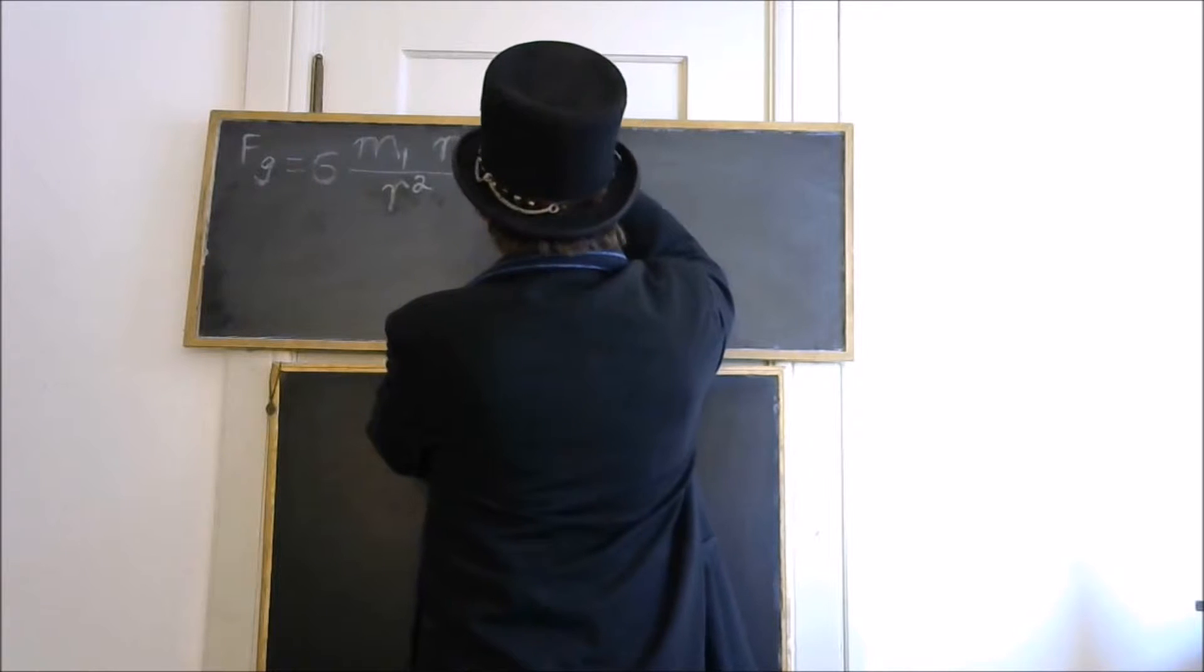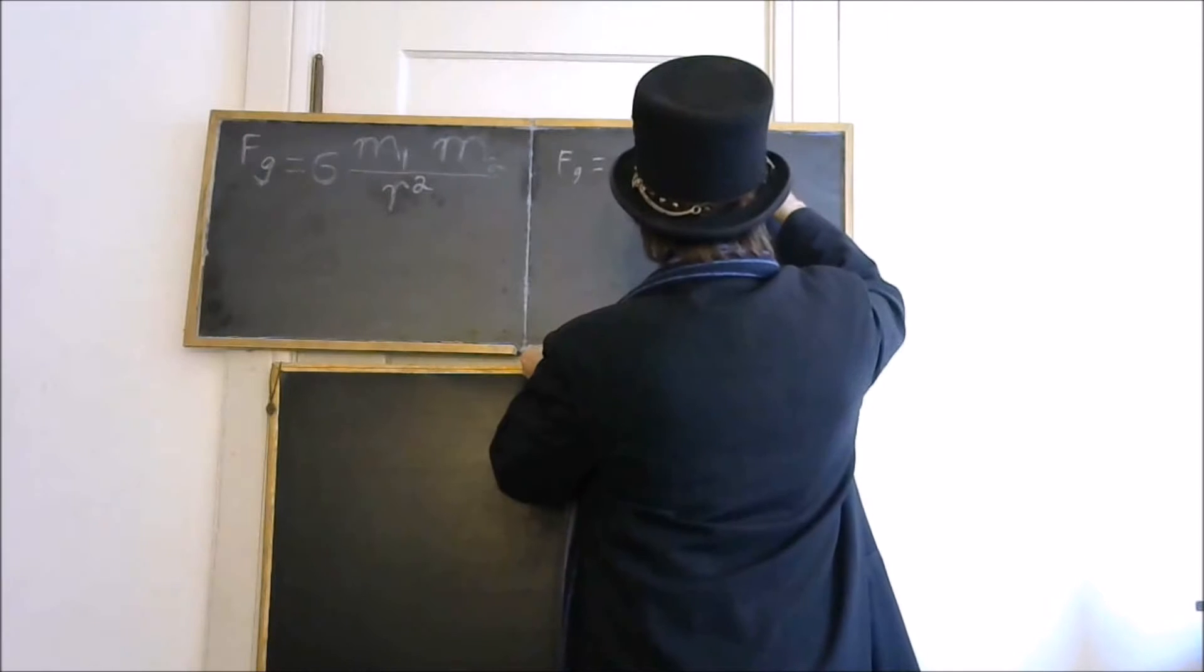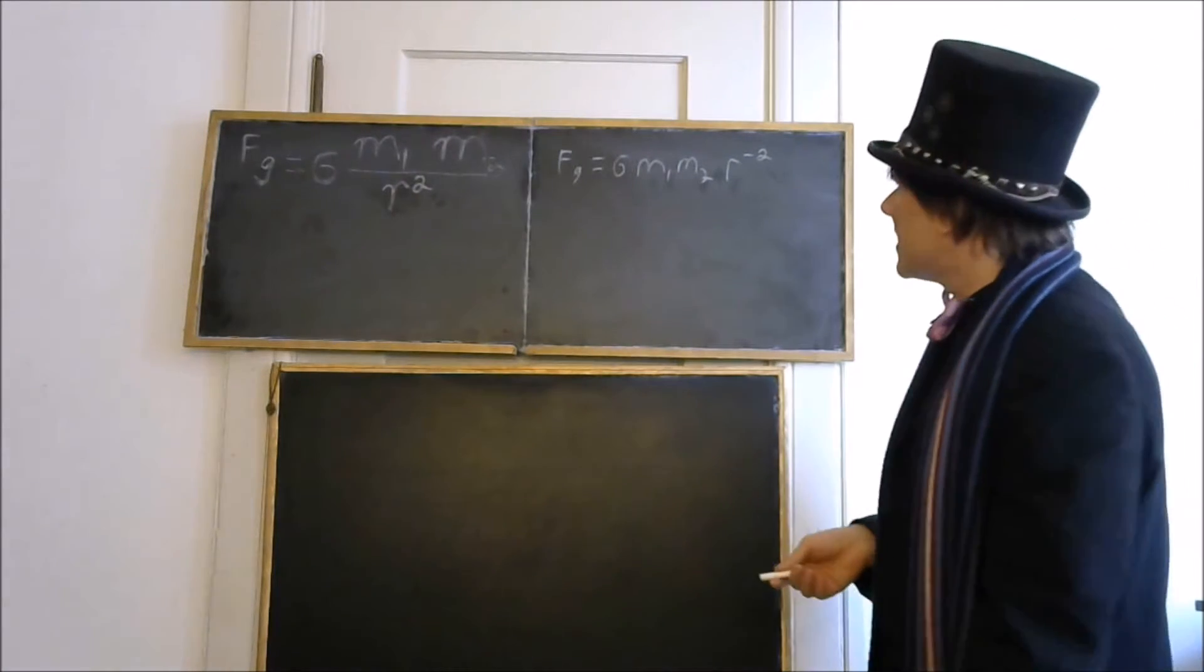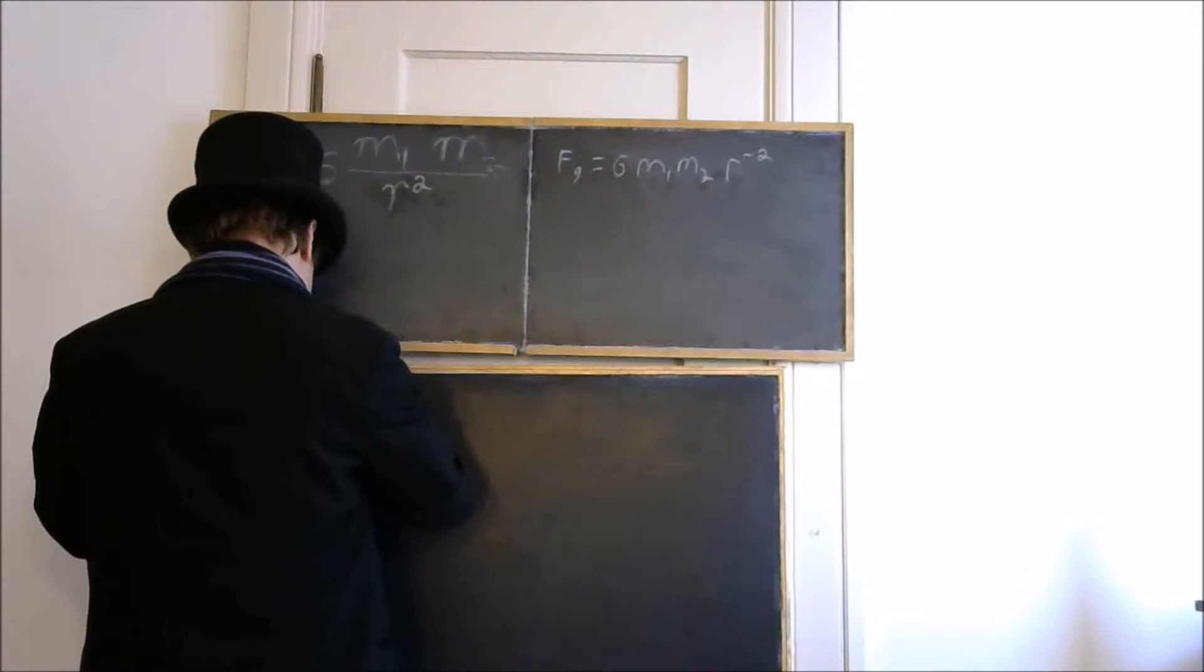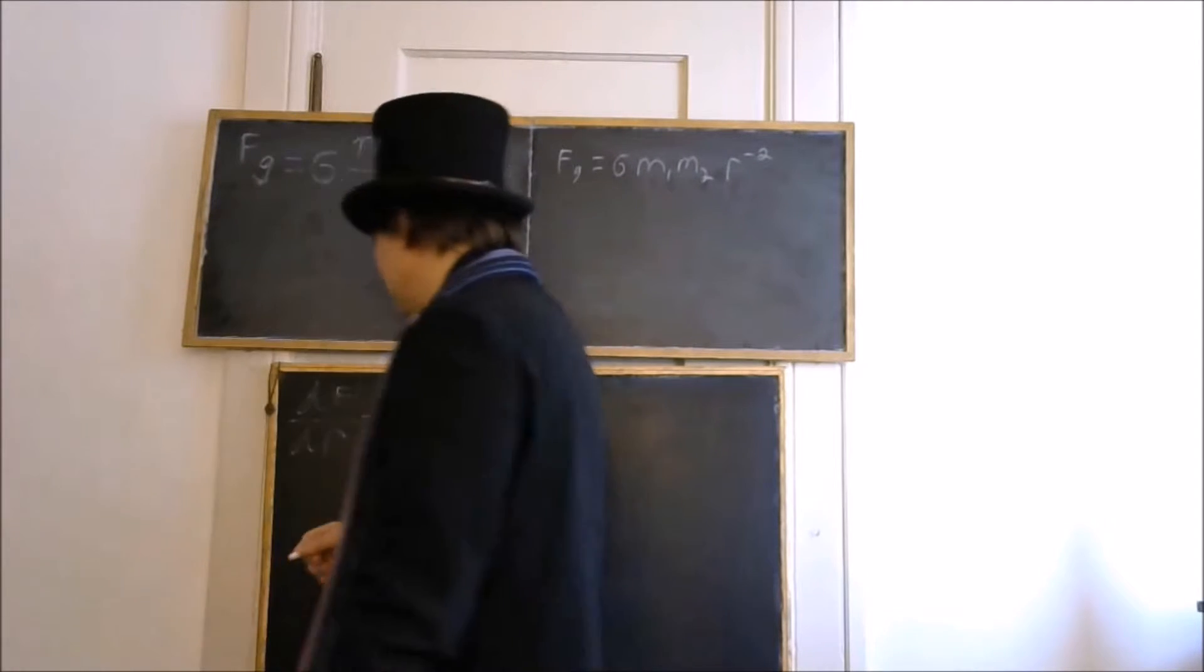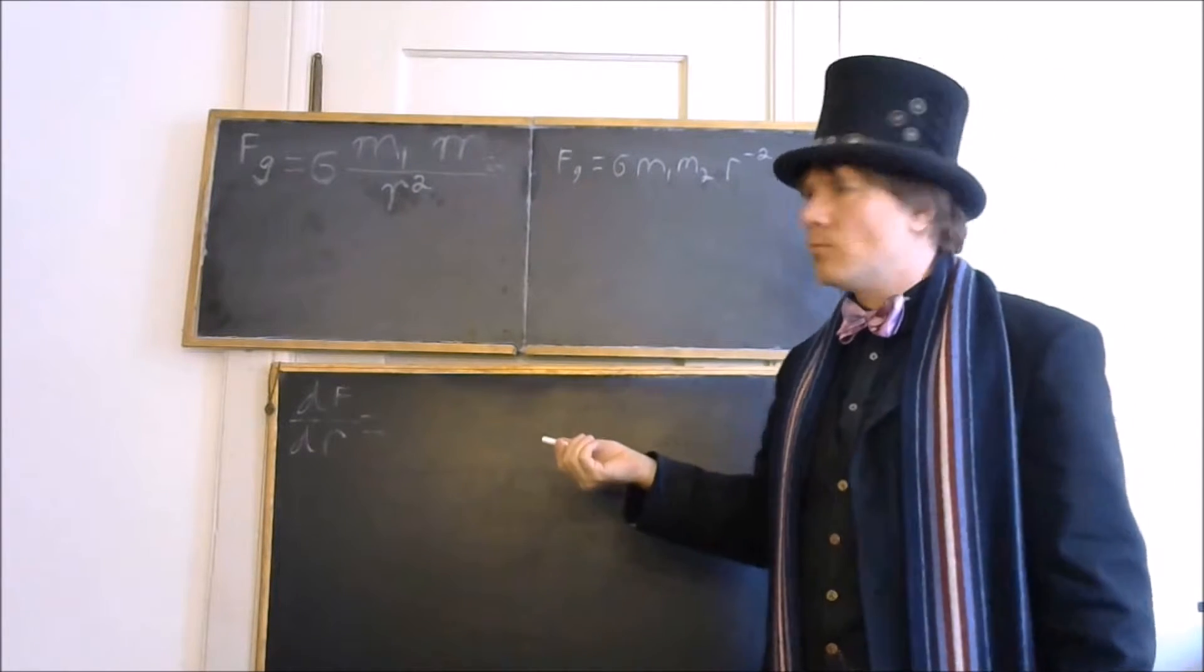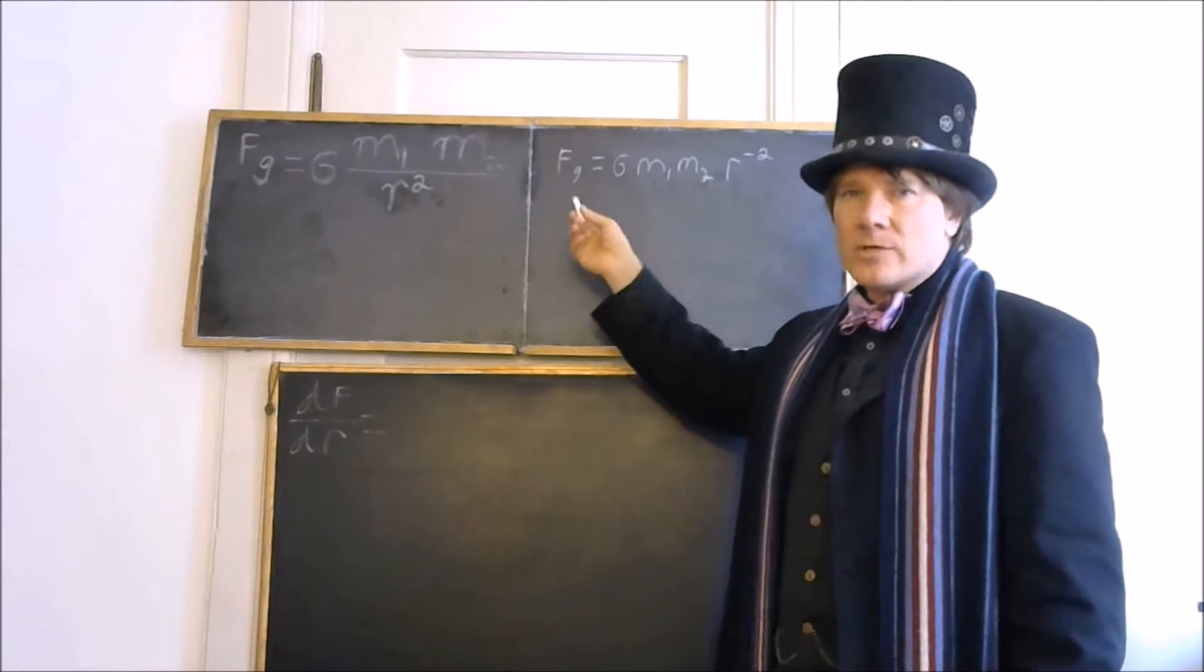So, what we'll do is, now we can take the derivative of both sides. It will be much easier now that we don't have to use the quotient rule. So, taking the derivative of the force, what happens here is the variable will simply become one.